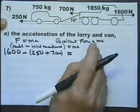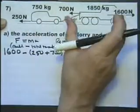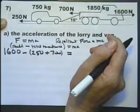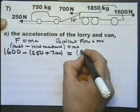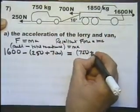So the total resistance is that resistance and that resistance added together. The mass, well, we're talking about the mass of the whole unit. The unit comprising of the lorry and the van. So you've got to think of the mass as being the van and the lorry added together.